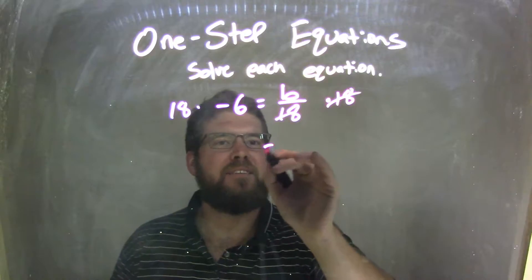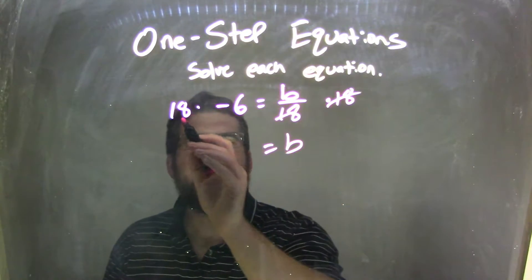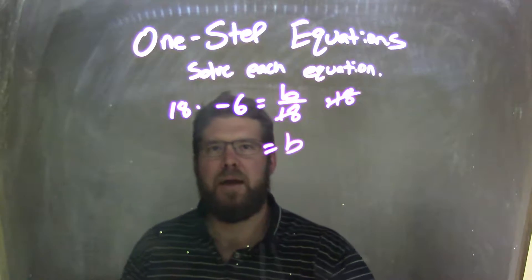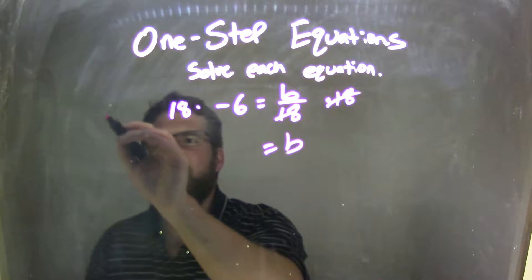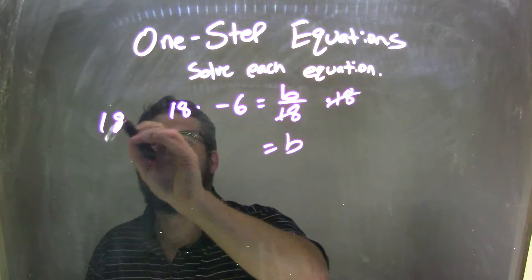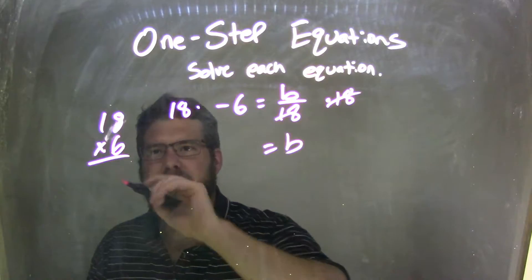That cancels these 18s, and I want them to be here. But really, what's 18 times a negative 6? Well, negative times a positive is going to be negative, so we know that. But how can I write 18, not 16, getting ahead of myself here, 18 times a 6, multiply by 6.